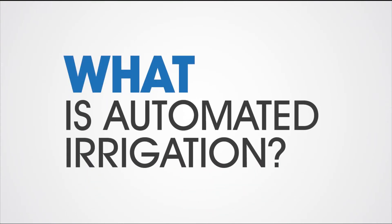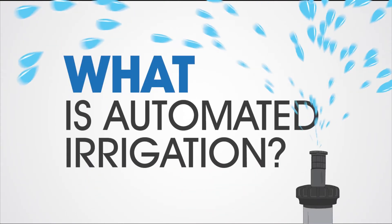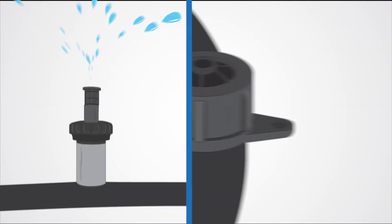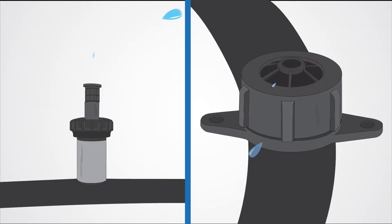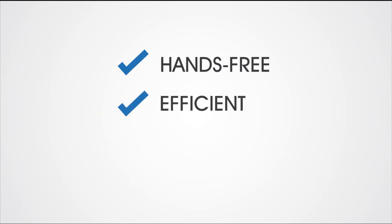What is automated irrigation? It's an automated system that controls when your garden is watered. Whether it's pop-ups or a drip system, automation means hands-free, efficient and convenient watering.